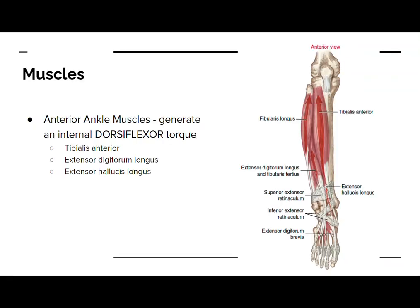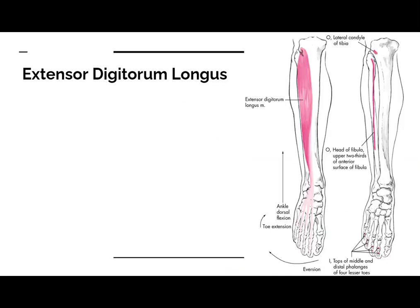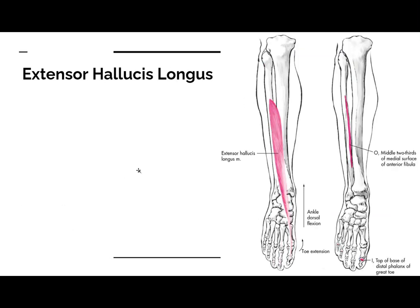Here's another view of the anterior ankle muscles that generate an internal dorsiflexor torque. The tibialis anterior is just lateral to your anterior crest, going to the medial side near the navicular and cuneiform. Then we have the extensor digitorum longus coming off the lateral side of the tibia and fibula going to digits two to five, and the extensor hallucis longus going to the big toe, or the hallux.